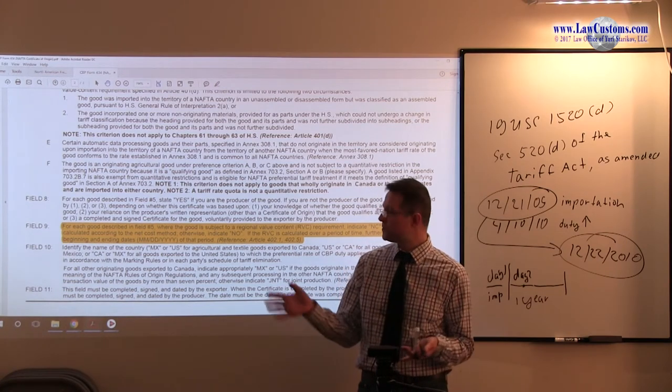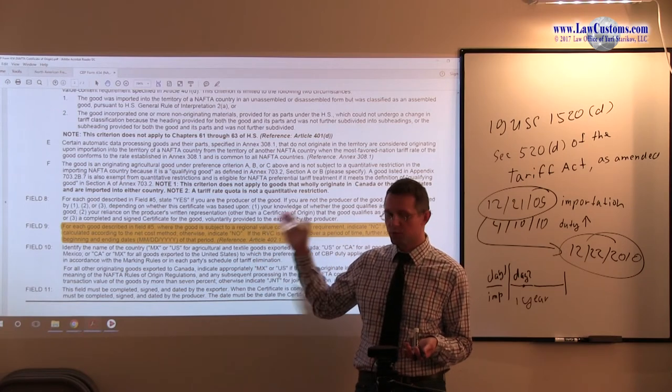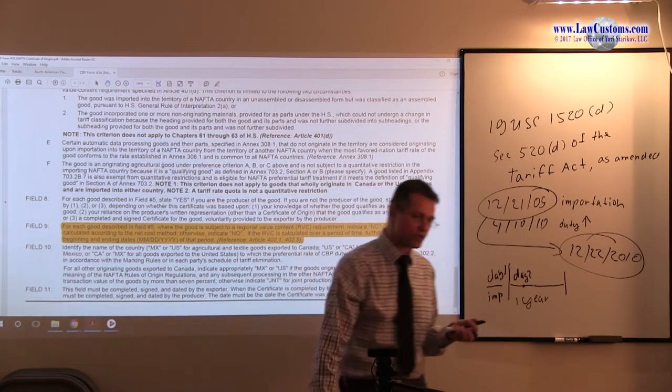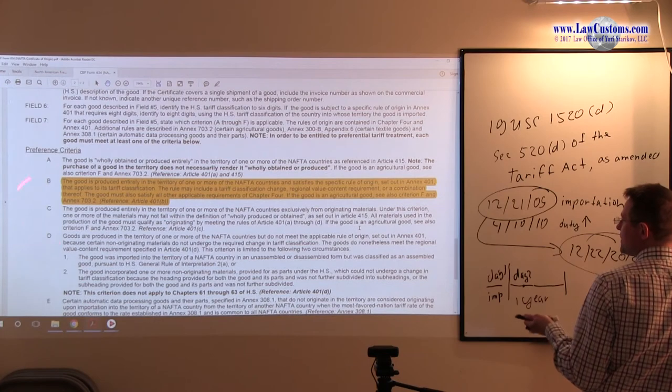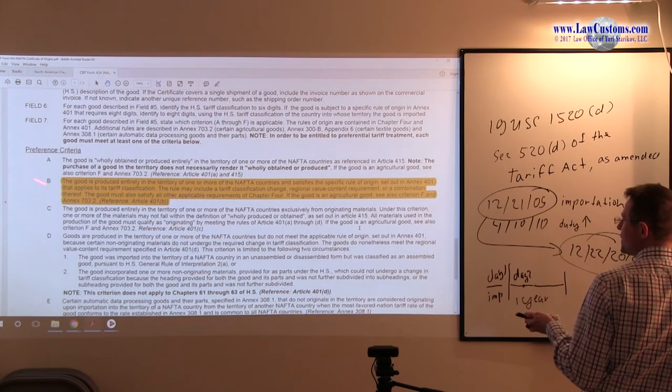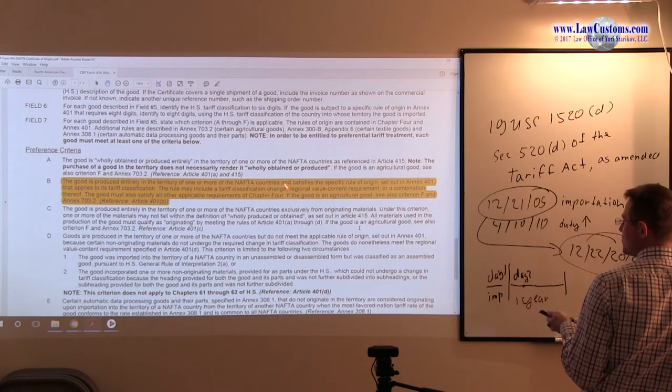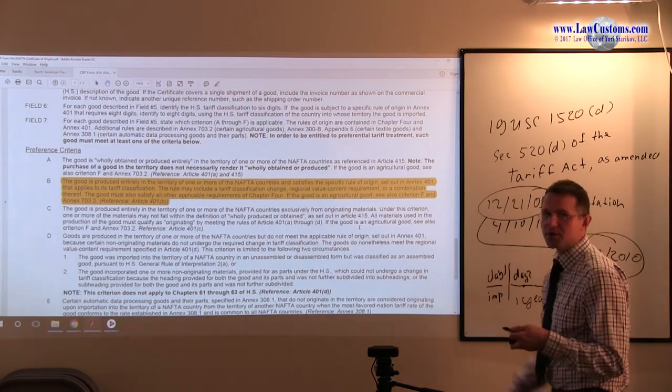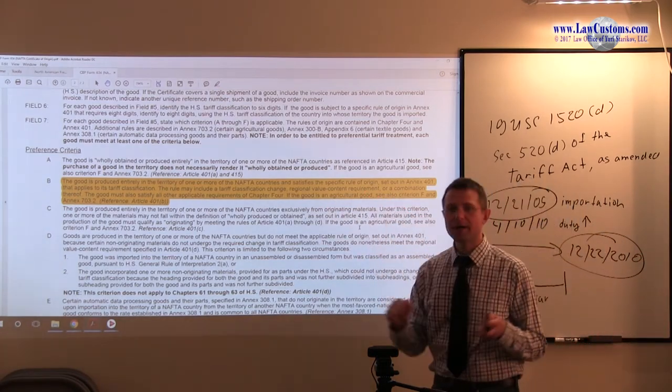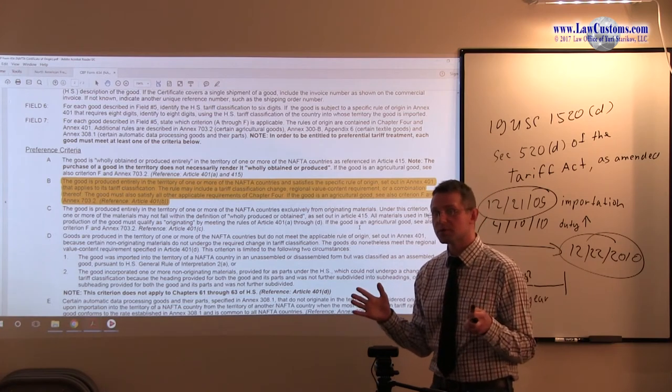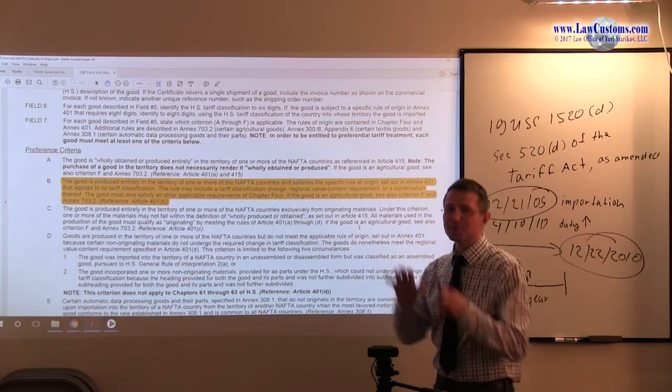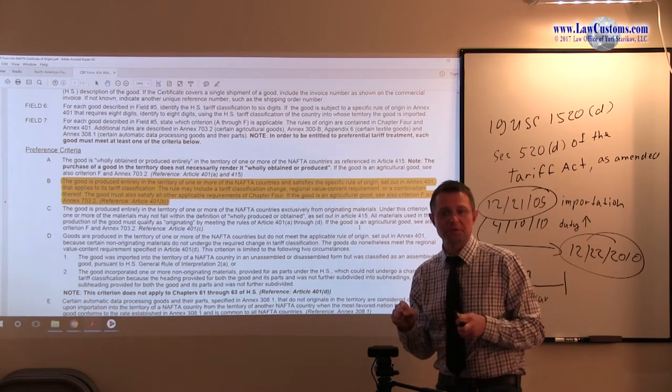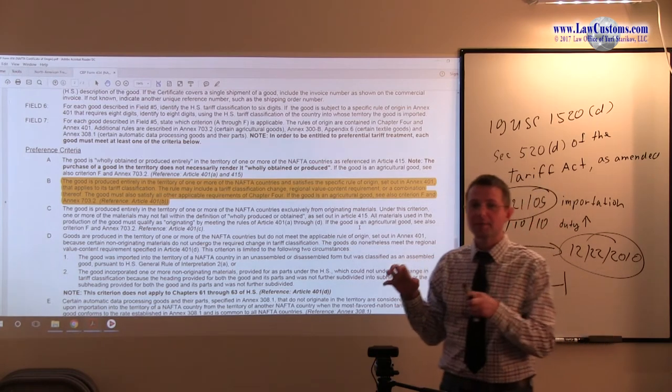If you have the point here, if you are using the net cost, the transaction value is out of the question. But at the same time, transaction value comes into play under this provision. You have to indicate the preference criteria and tariff change, the original value content requirement. If you are using the original value content requirement here, you kind of have to provide the transaction value or net cost, transaction value method or net cost method.